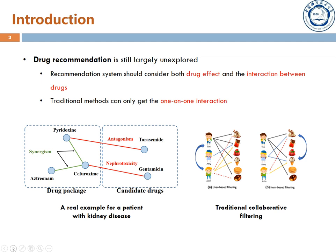We illustrate this by a patient with kidney disease. The drug package for this patient contains three drugs with synergism interaction, which can improve the effect of the drug package. Some drugs with antagonism or toxicity are not included in the package. In some cases, a doctor may still use some drugs although they have antagonism interaction or toxicity. Traditional methods such as collaborative filtering can only get the one-on-one interaction, and it is hard to achieve satisfactory performance. Therefore, we propose a novel method to solve this problem.